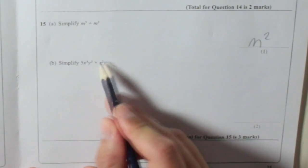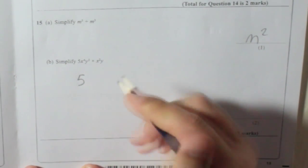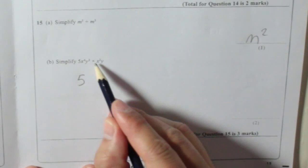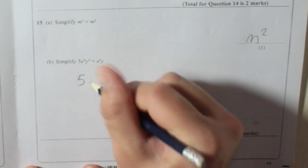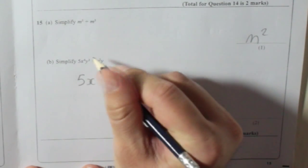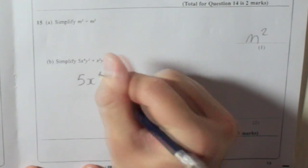So you've got 5, there's no more numbers, so it's going to be 5. x to the power of 4 times by x to the power of 2 is x to the power of 4 plus 2 is 6.